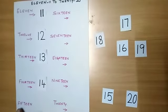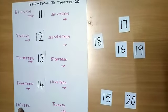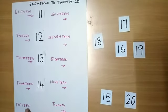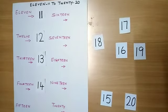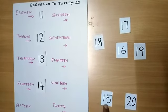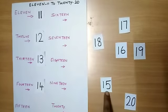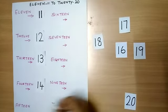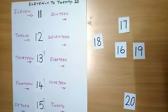Next one is F-I-F-T-E-E-N. That is 15. So where is number 15? This is number 15. 1 and 5 makes 15. So let me arrange the number 15 to number name 15.